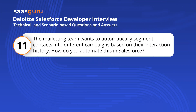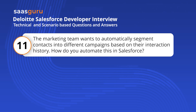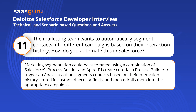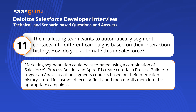The marketing team wants to automatically segment contacts into different campaigns based on their interaction history. How do you automate this in Salesforce? Marketing segmentation could be automated using a combination of Salesforce's Process Builder and APEX. I'd create criteria in Process Builder to trigger an APEX class that segments contacts based on their interaction history, stored in custom objects or fields, and then enrolls them into the appropriate campaigns.